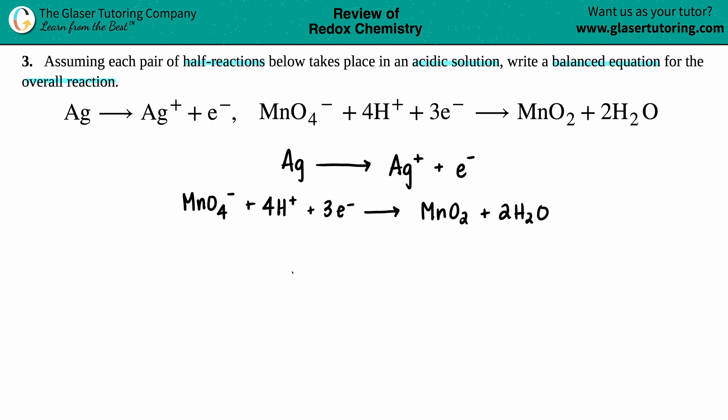The first thing that we have to do is make sure that all the elements are balanced. I have one silver on the left side, one silver on the right side. I am not taking into consideration any electrons because those aren't elements. I have one manganese, one manganese. I have four oxygens here and two oxygens plus two oxygens, so that checks out. And then I have a total of four hydrogens on this side and four hydrogens on this side.